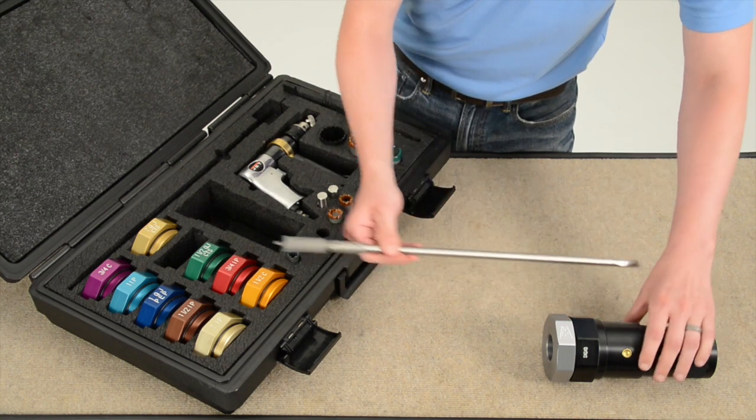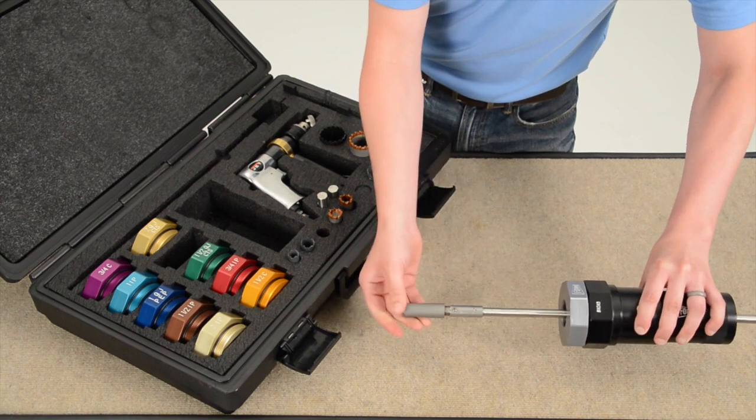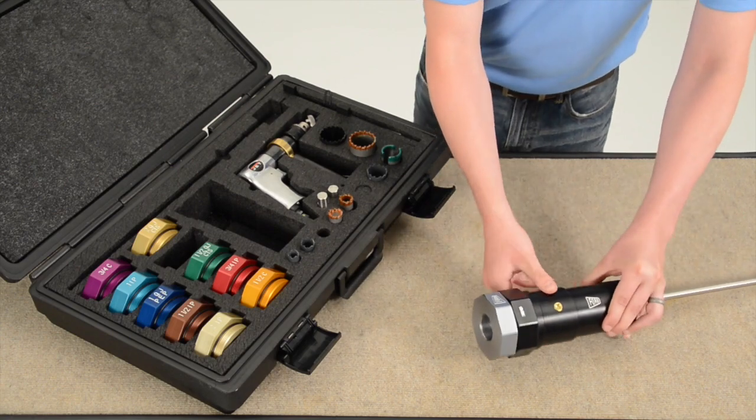Slide the hexed end of the shaft through the bottom of the SimTap until it extends all the way through the body. Pull the shaft from behind until the hole saw bottoms out inside the body.